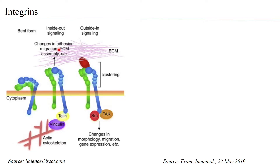The other way is also possible — a ligand can bind to the integrin, causing it to go from a bent form to an extended form. On ligand binding to the integrin, the intracellular domain of the integrins is able to bind to several molecules or components inside, which are able to induce signal transduction.